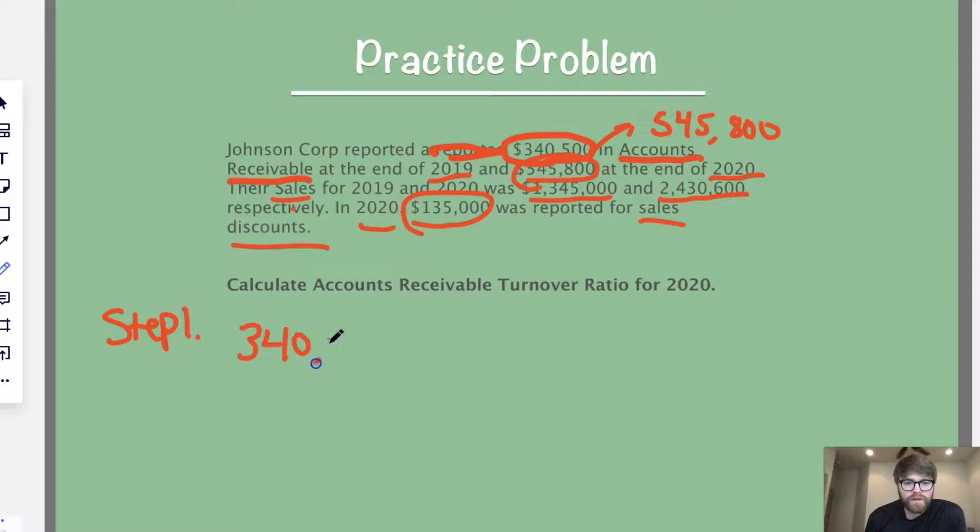So, the first thing we need to do, remember, step one, that's going to be, you're going to average your accounts receivable. So, let's do that. So, you see here, they have $340,500 at the end of 2019, and $545,800 at the end of 2020. We have to add those up and divide by two. So, take $340,500 plus $545,800. So, let's go ahead and do that, get your calculator out, and divide by two. And you get $443,150. So, that's the first step.